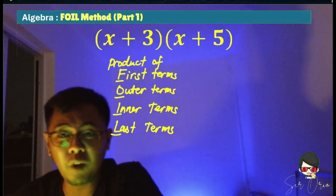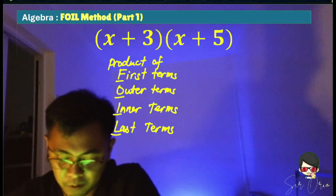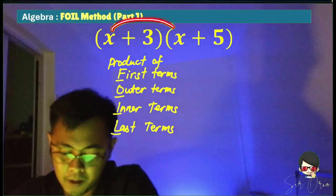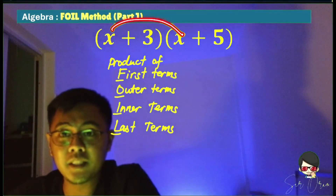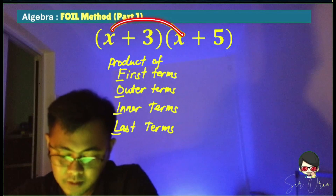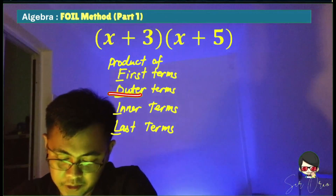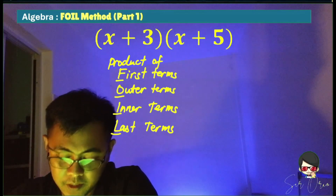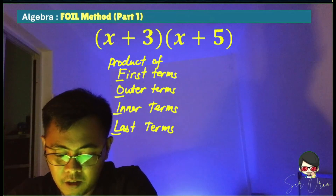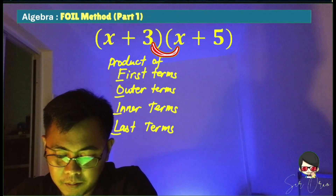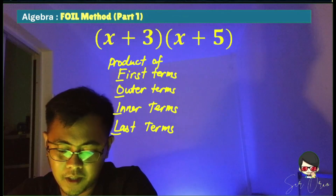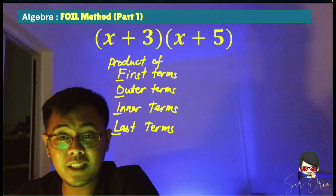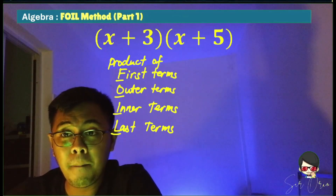So the FOIL method — FOIL stands for the product of the first term by the first term, product of the outer terms, product of the inner terms, and product of the last terms. So that is the FOIL method.